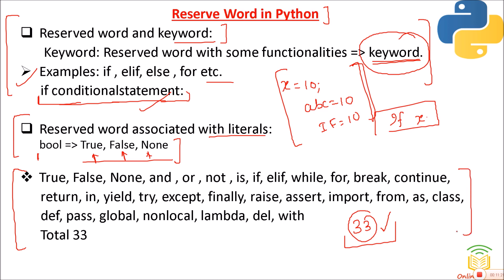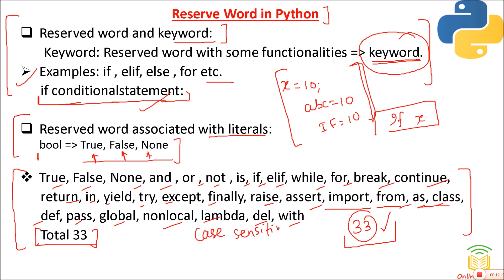We'll discuss each reserved word as we go forward. The full list includes: True, False, None, and, or, not, is, if, elif, while, for, break, continue, return, in, try, except, finally, raise, import, from, as, class, def, pass, global, nonlocal, lambda, del, with — 33 total. All are case sensitive.